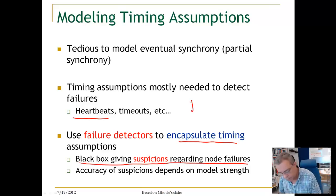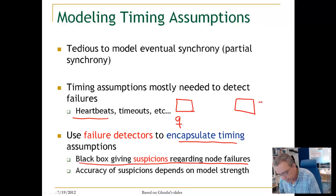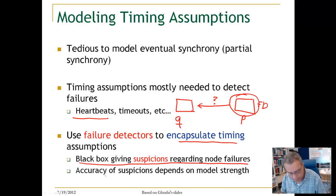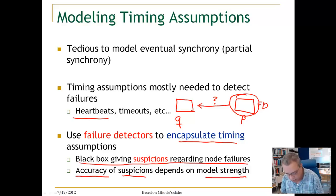So we have a node Q, and the Failure Detector exists in each node, say node P. It will give its opinion — this Failure Detector gives its opinion whether Q has crashed or is still alive. It turns out that the accuracy of suspicion, whether your suspicion is correct or false, will depend on model strengths.